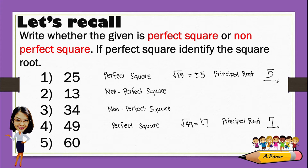And for the last one: 60. This is a non-perfect square, because there are no factors that when multiplied by itself, the answer is 60.